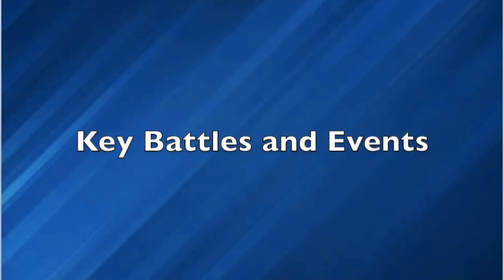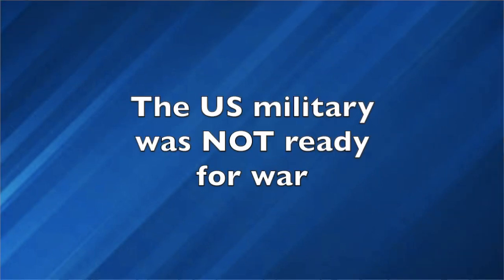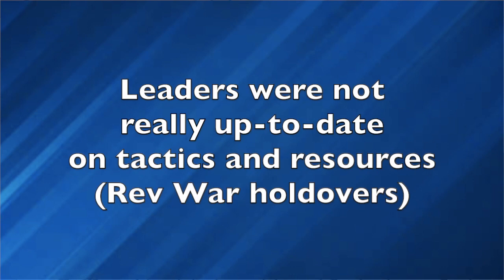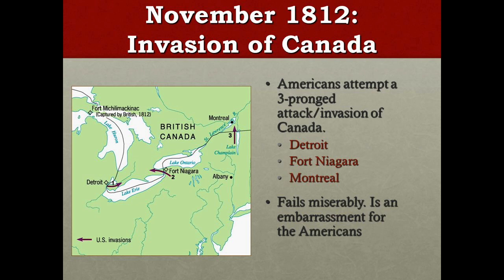The U.S. military was very unprepared for war in 1812. They only had 12,000 troops and depended heavily on state militias. Many of the military leaders were left over from the Revolutionary War era and were not up-to-date on tactics and resources. As war began, the U.S. tried to attack Canada on three separate fronts — from Detroit into Canada, from Fort Niagara into Canada, and from Lake Champlain into Montreal. The Americans believed the Canadians would support them, but they were severely mistaken. This tactic was a miserable failure and an embarrassment for the Americans.